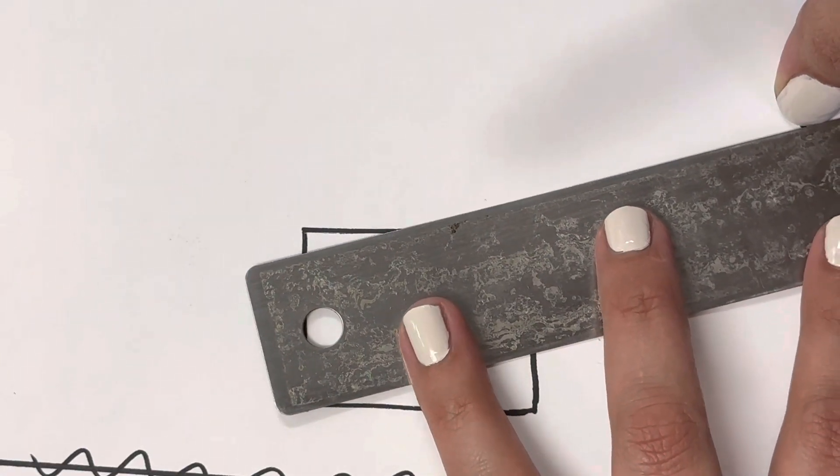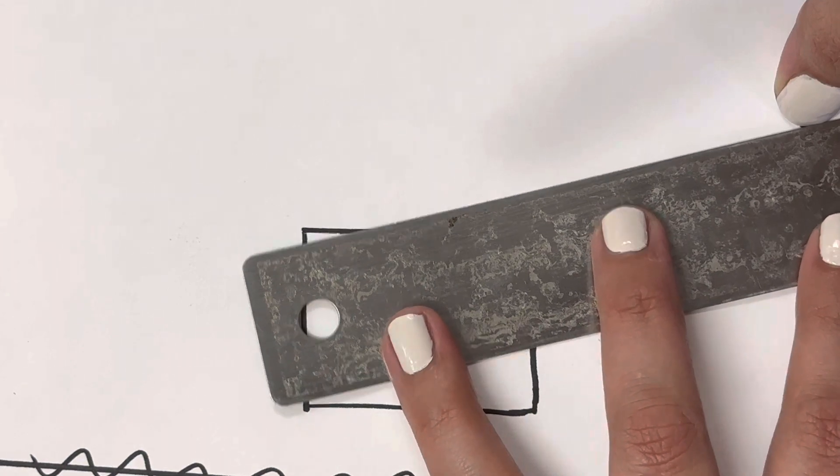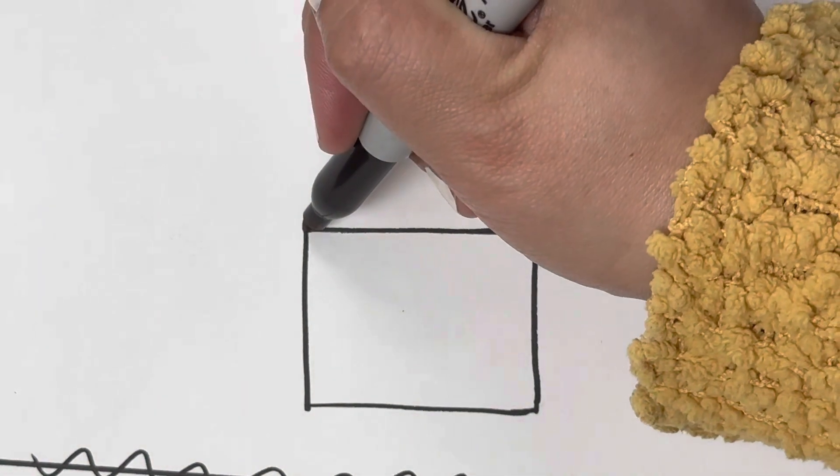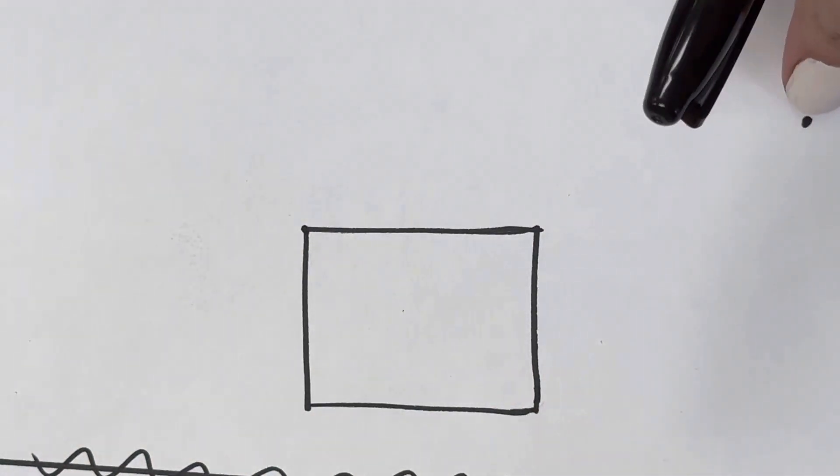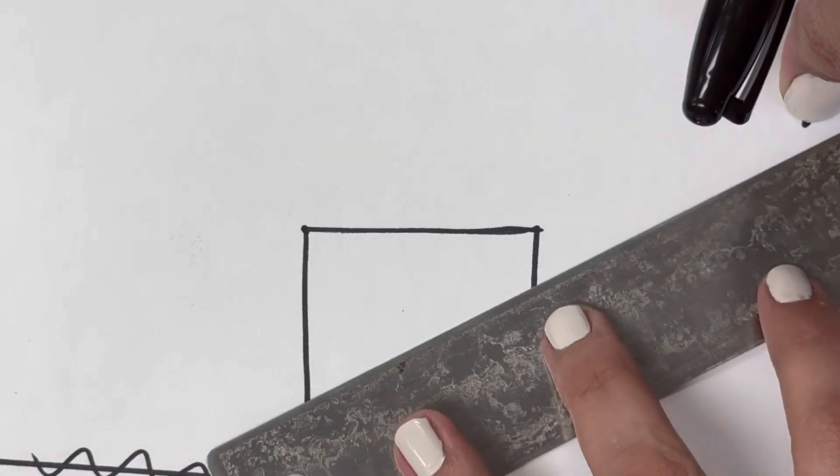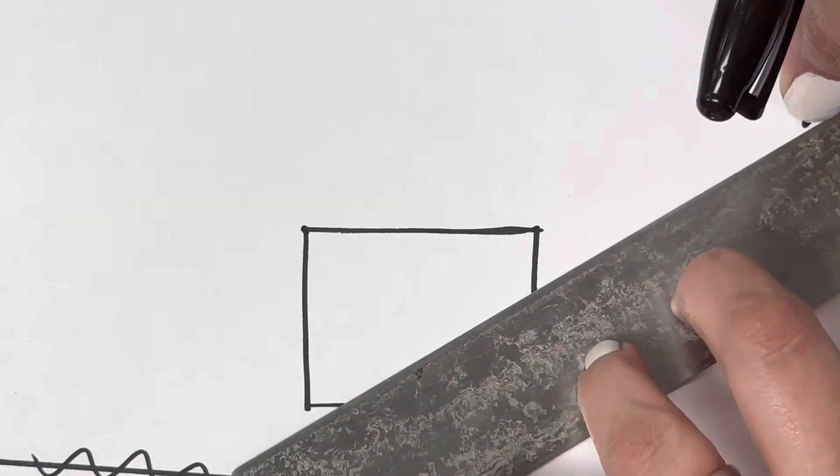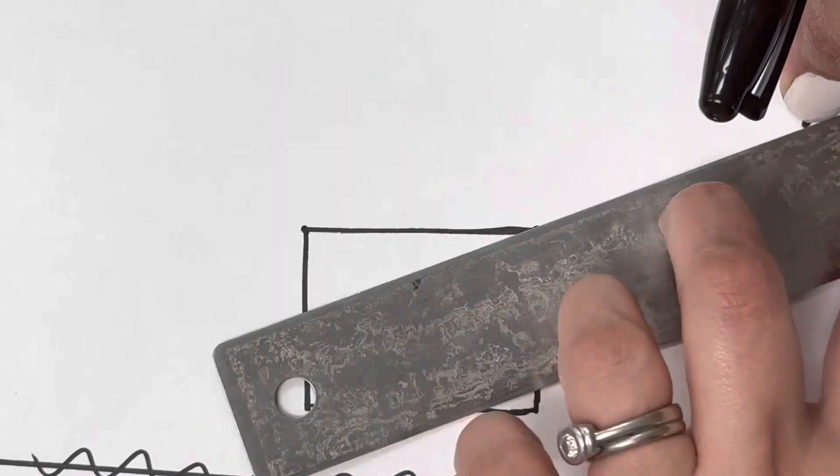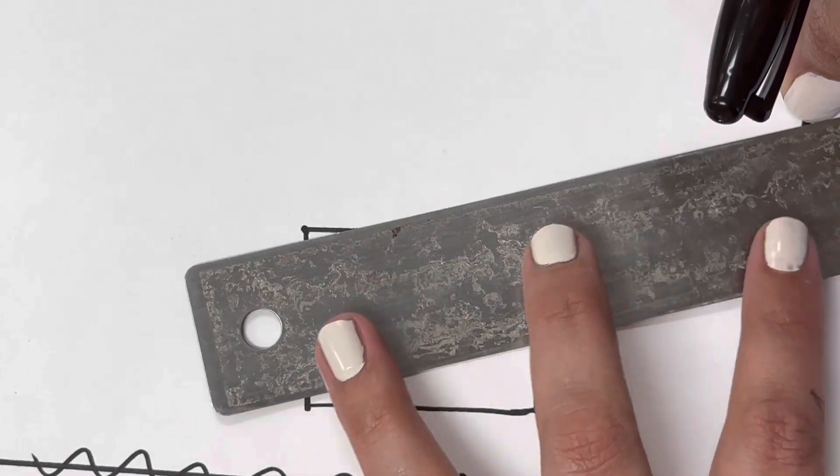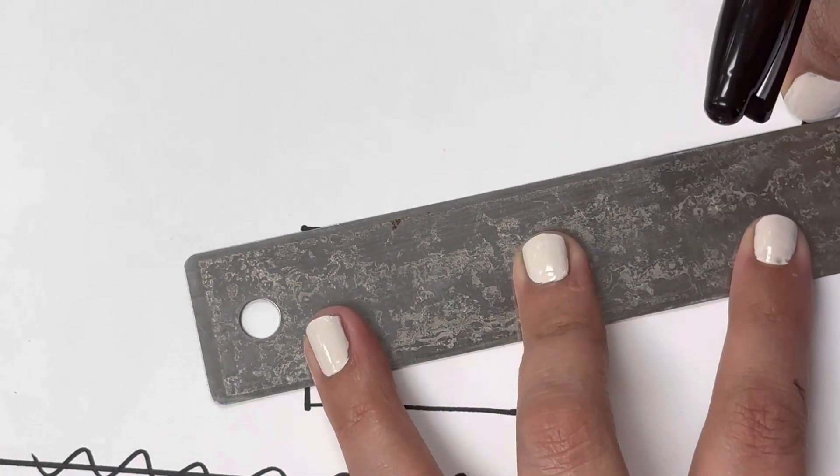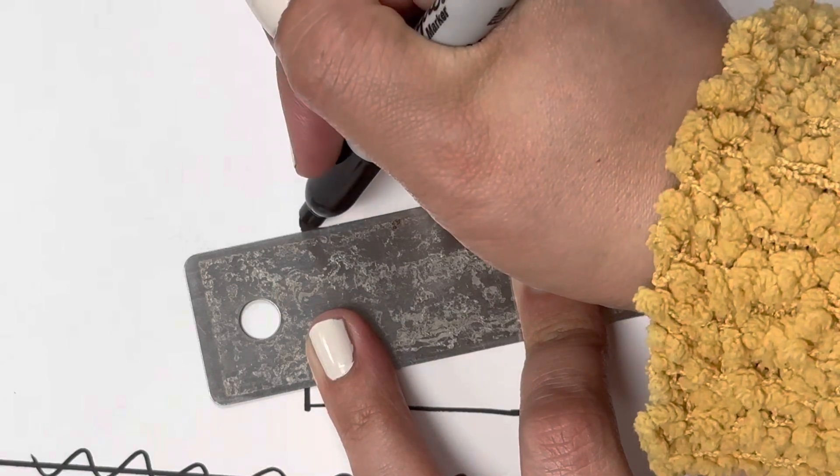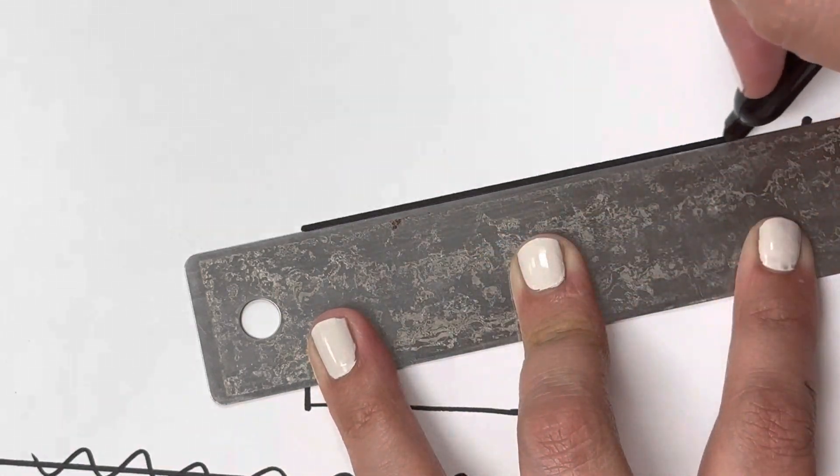So right now we want to connect it to this point, so I'm going to put my thumbnail on my vanishing point, put my ruler there, that way the ruler stays on the vanishing point, and then I'm just going to move it until it gets to my other point that I want it to connect to, and I'm going to go ahead and connect that line.